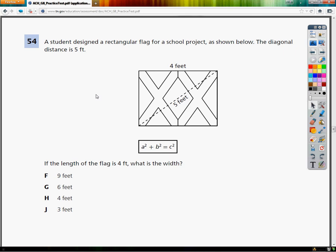A student designed a rectangular flag for a school project as shown below. The diagonal distance is 5 feet, and they give you this box here with the formula in it. That's important: A squared plus B squared equals C squared. If the length of the flag is 4 feet, what is the width?